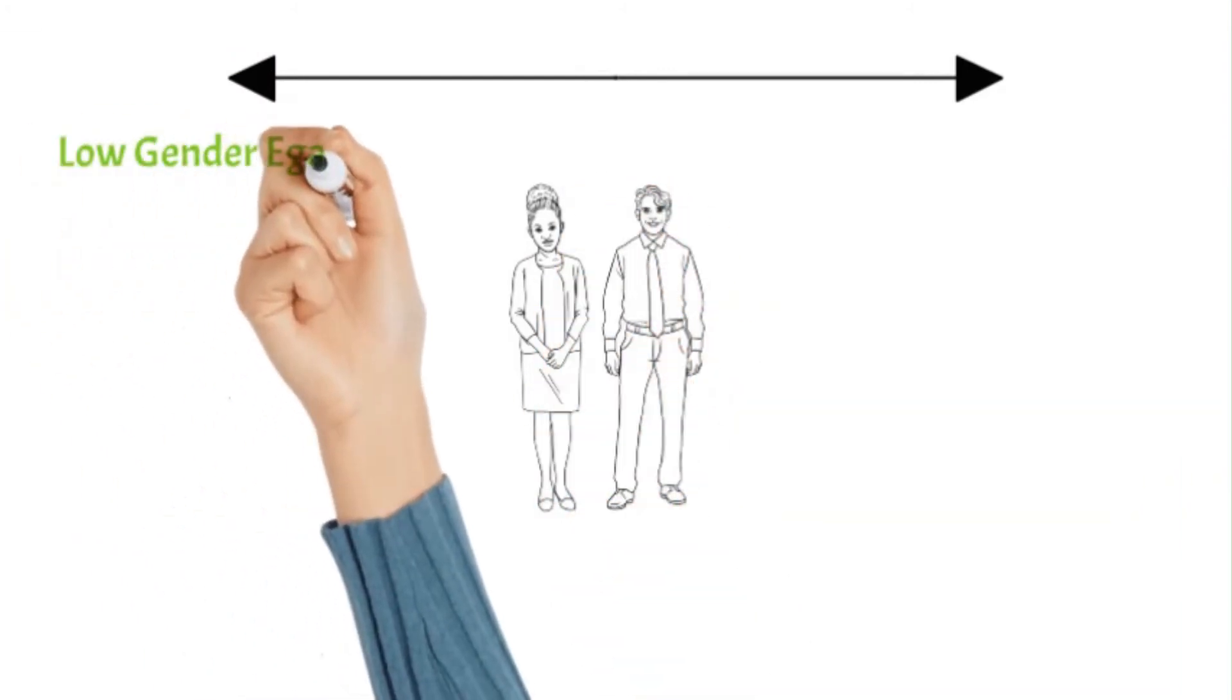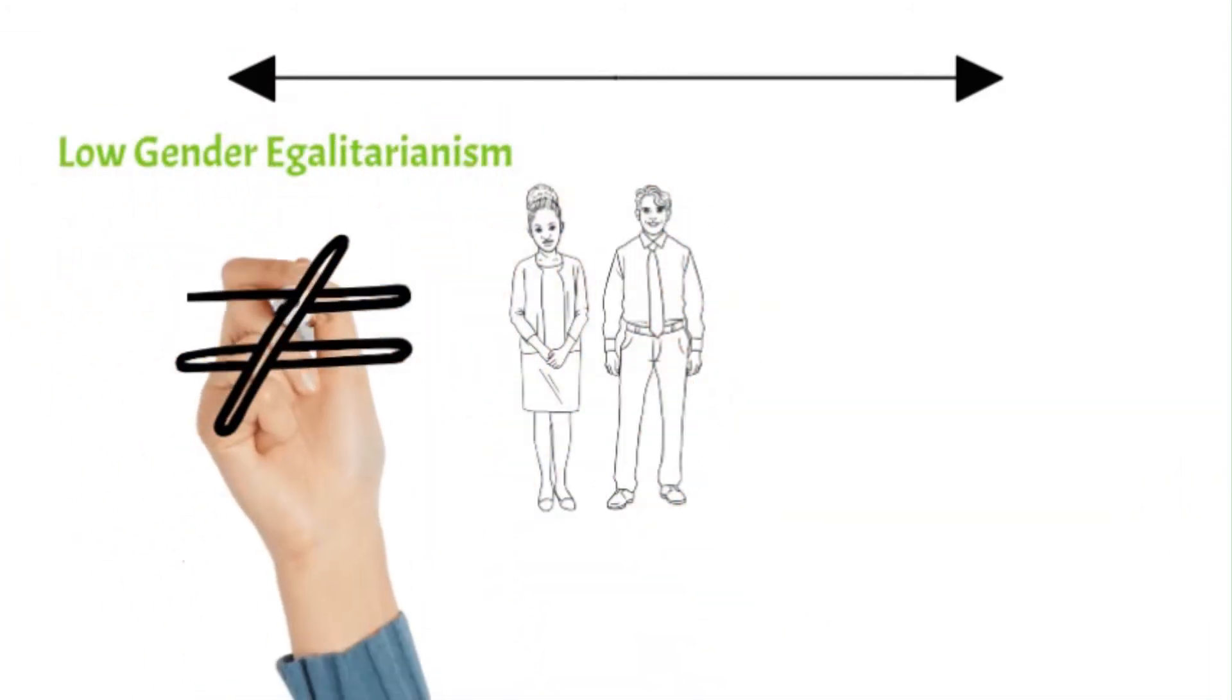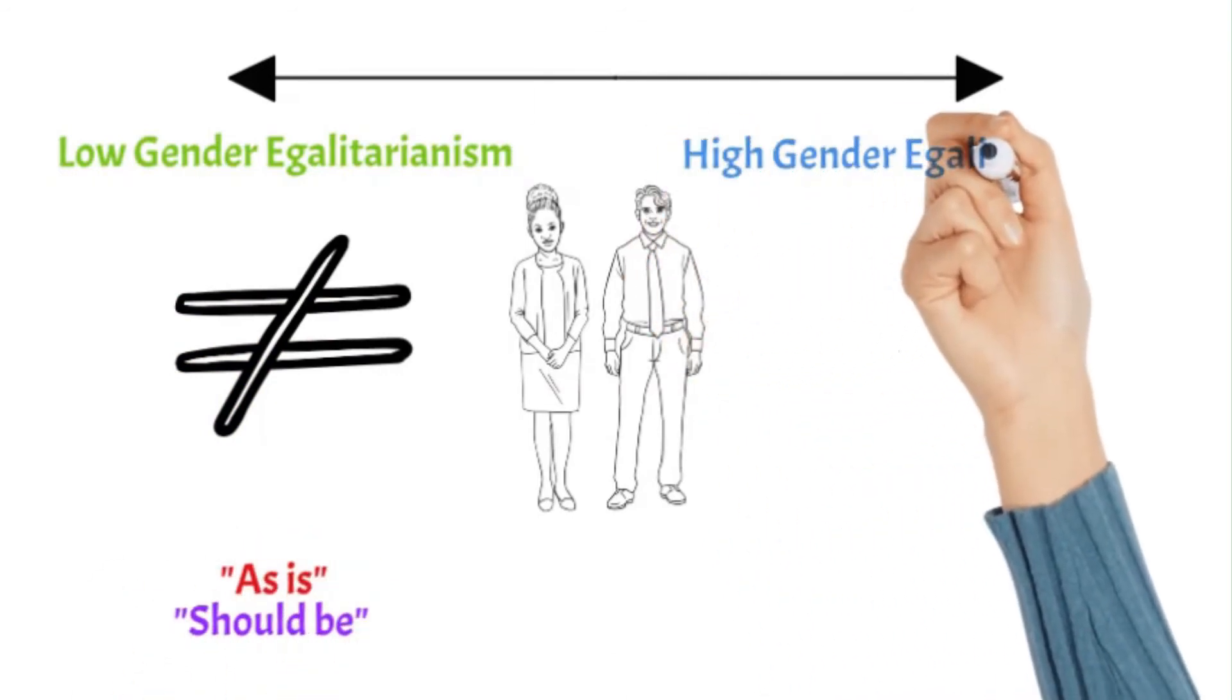Gender egalitarianism is the degree to which a collective minimizes, and should minimize, gender inequality.